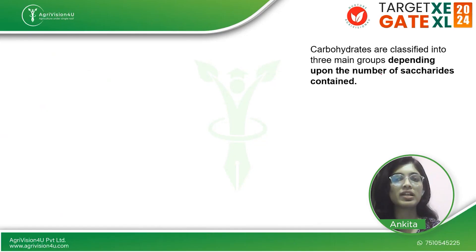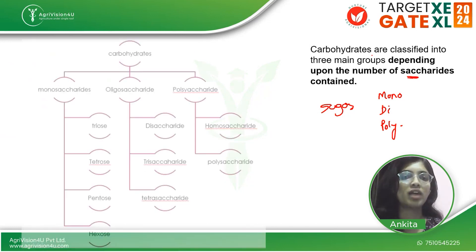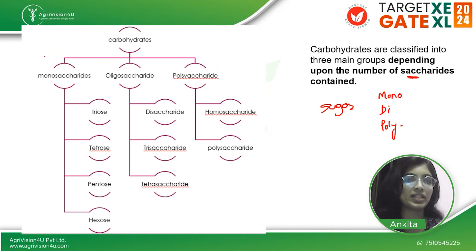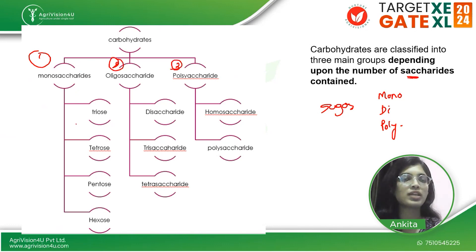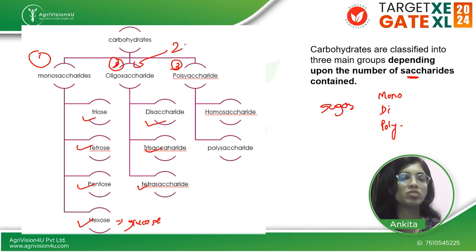Carbohydrates are classified into main groups depending on the saccharide unit — how many sugar units are present. Carbohydrates are classified into three basic categories: monosaccharides, oligosaccharides, and polysaccharides. Monosaccharides have a single saccharide unit; examples include trioses, tetroses, pentoses, and hexoses such as glucose. Oligosaccharides have two to ten carbon atom units.